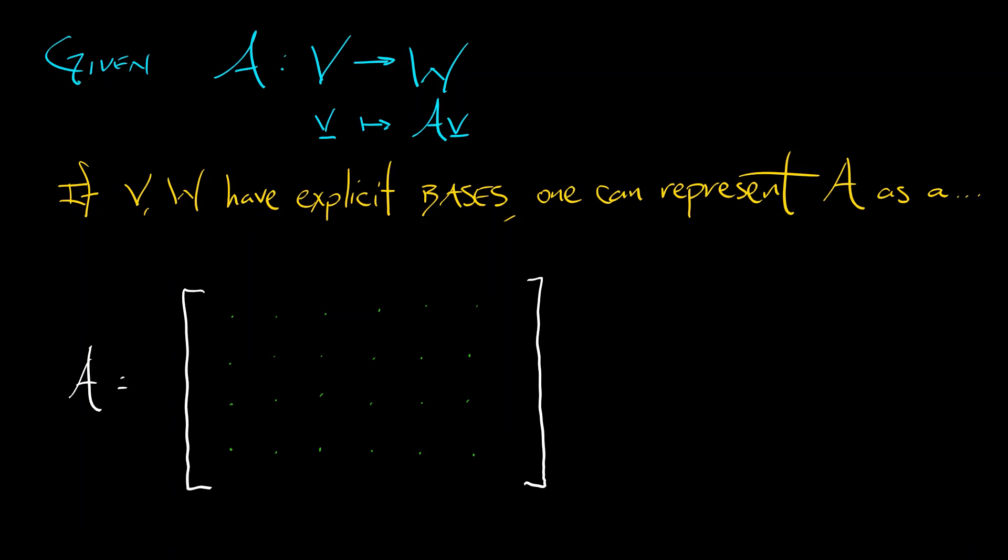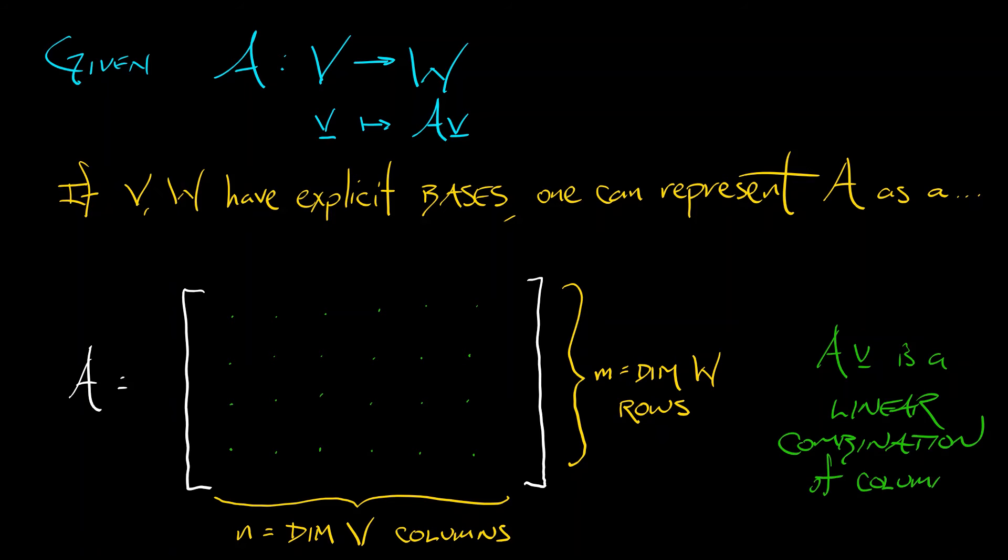Back to the story. Now, the number of columns in a matrix is N, the dimension of V. The number of rows, M, is the dimension of W. We say this is an M by N matrix. And when we compute A times V, when we apply a linear transformation to a vector, we're really doing matrix vector multiplication. We're really taking a linear combination of the columns of the matrix of A.